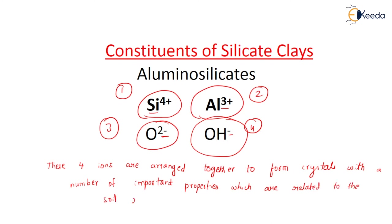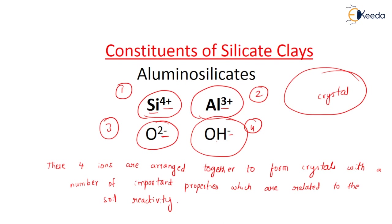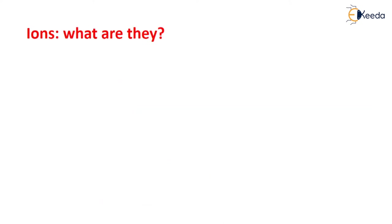To form aluminosilicates, silicon, aluminium, oxygen, and hydroxide - these four ions have to arrange together in such a way that they are forming a crystal, and they are related to soil activity. The charges are 4+, 3+, 2- and minus. Silicate clay minerals are crystalline and formed by specific arrangement of ionic forms of silicon, aluminium and oxygen. These ions are stable forms of elements that possess an electrical charge - 4+, 3+, 2- and minus.